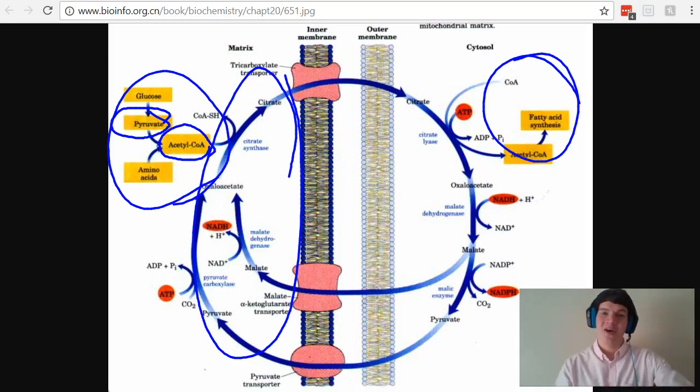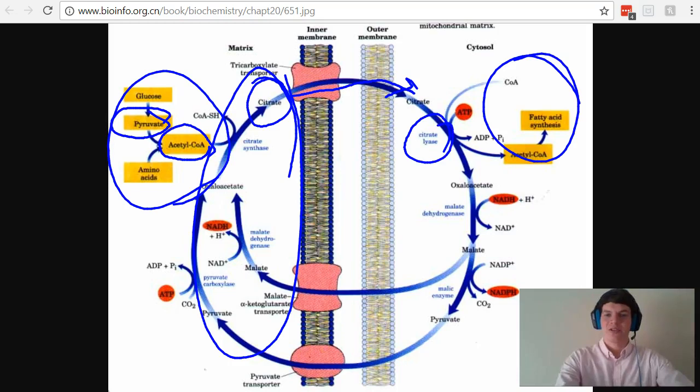What you may have not known is that citrate is used to shuttle acetyl-CoA from the matrix of the mitochondria to the cytosol. Citrate right here is going to travel through the shuttle system and then through the reaction with citrate lyase, it's going to result in the production of acetyl-CoA, which can then be used for fatty acid synthesis.